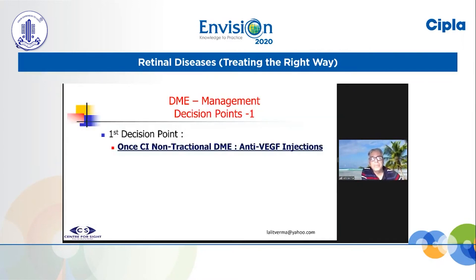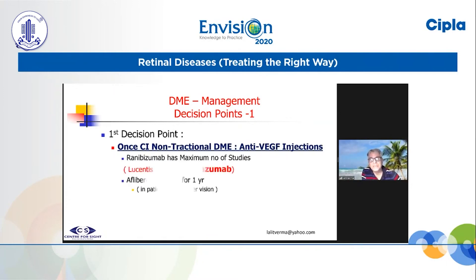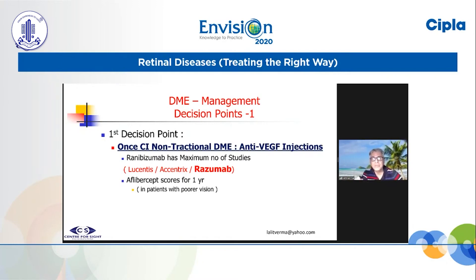For all practical purposes, decision-making point number one is: once you have decided to treat center-involving non-tractional diabetic macular edema, anti-VEGF is generally the first choice. Ranibizumab has a maximum number of studies. The choice between innovator and biosimilar is not much — I leave it to the patient. Whatever the patient brings — Lucentis, Accentrix, or Razumab — we give it.